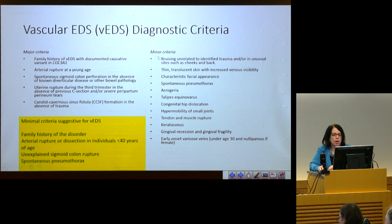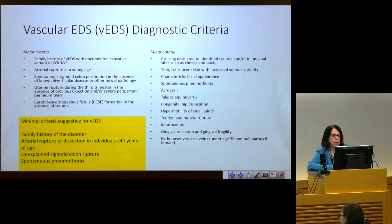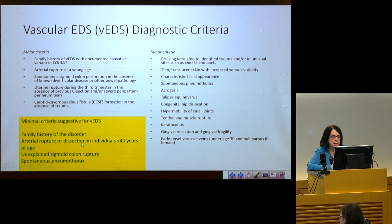For the vascular type of Ehlers-Danlos syndrome, the major criteria are listed here. The key thing to know is that this is the type we worry about the most — these are patients at the gravest risk for mortality from arterial dissection and rupture of hollow organs such as the GI tract, uterus, and bladder. The minimal criteria suggestive for vascular EDS include a family history of the disorder, arterial rupture or dissection in individuals under 40, an unexplained rupture of the sigmoid colon, and spontaneous pneumothorax.